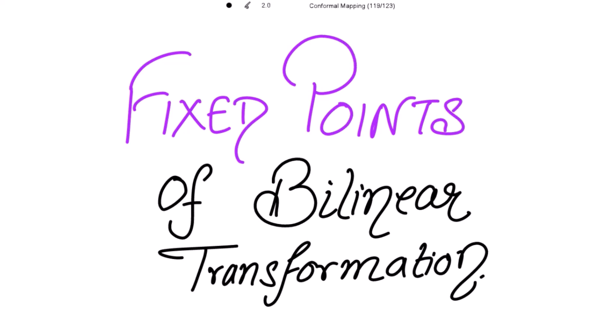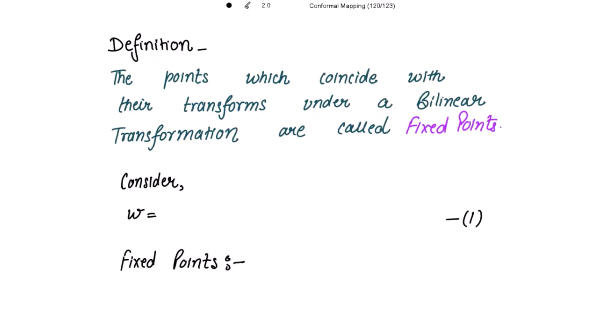Good morning. Today we are going to start this new content: Fixed Points of Bilinear Transformation. The definition is: the points which coincide with their transforms under a bilinear transformation are called fixed points. Suppose there is a point z in the z-plane and a point w in the w-plane. For the fixed points, w should be equal to z. Consider the bilinear transformation w equal to az plus b over cz plus d, with the condition that ad minus bc is non-zero.